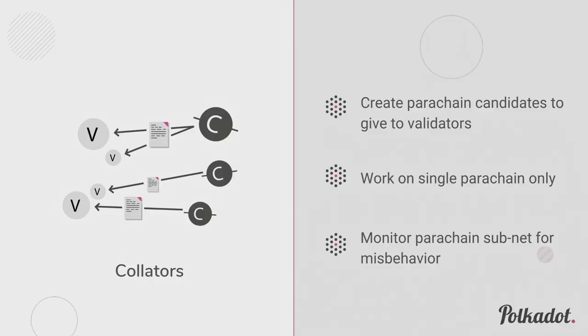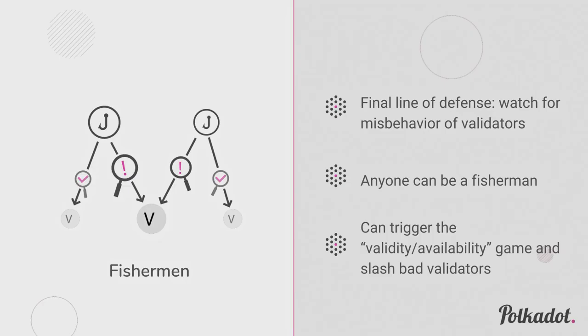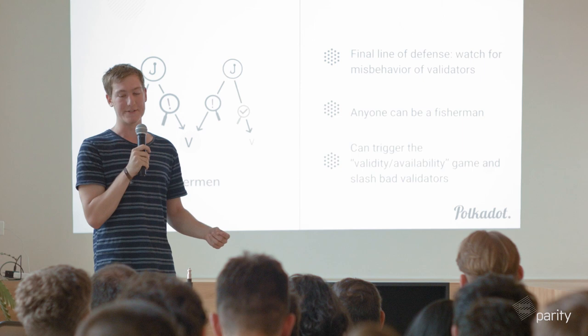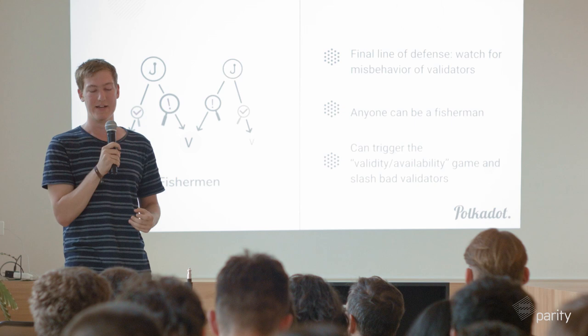Then we have collators — each on a specific parachain. They create parachain blocks, give them to validators to participate in consensus, and monitor their parachain subnetwork for misbehavior, such as if validators sneaked in a bad parachain block. Finally, fishermen watch for misbehavior without creating blocks. It's a super easy, unpermissioned role — you don't have to register. You just watch a specific parachain, and if you witness misbehavior, post an irrefutable proof on the network, leading to whoever committed the misbehavior being slashed. This is what I refer to as the validity or availability game.